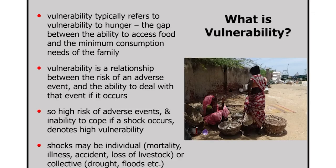We turn now to the context in terms of vulnerability — what kinds of vulnerabilities are people facing, and how do they actually encounter and strategize to move past these vulnerabilities? Vulnerability typically refers to vulnerability to hunger: the gap between the ability to access food and the minimum consumption needs of the individual or family. This is a picture of a very poor woman who is a widow, selling some poor quality fish near a harbour — she's not even able to make ends meet, she doesn't have the resources to buy better quality fish or find better markets.